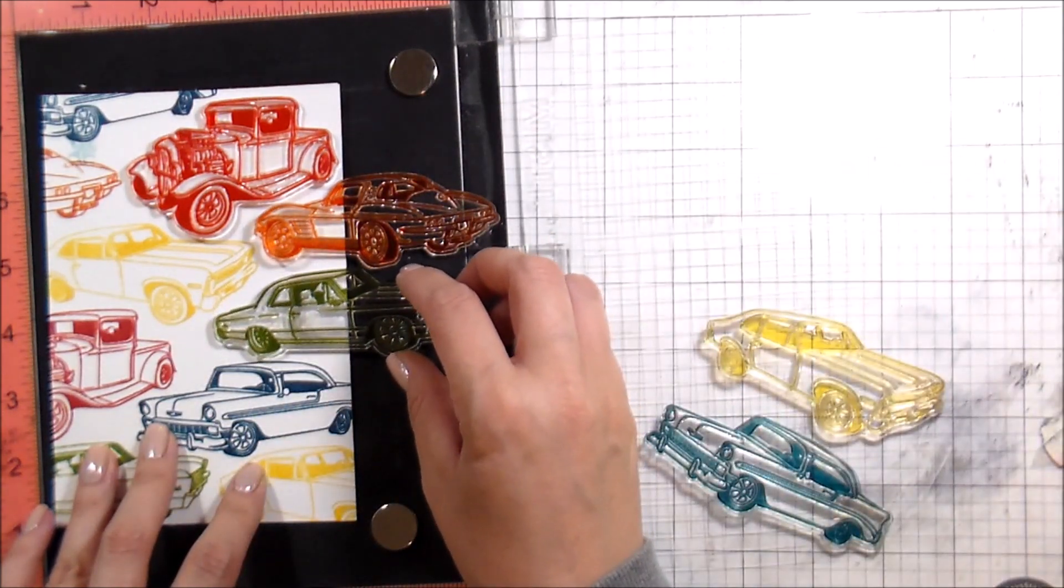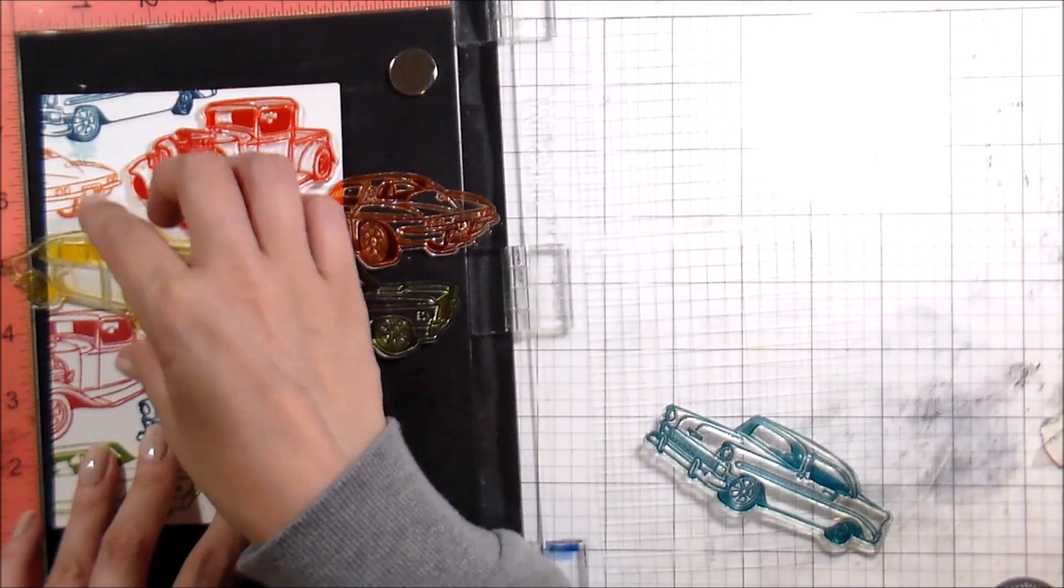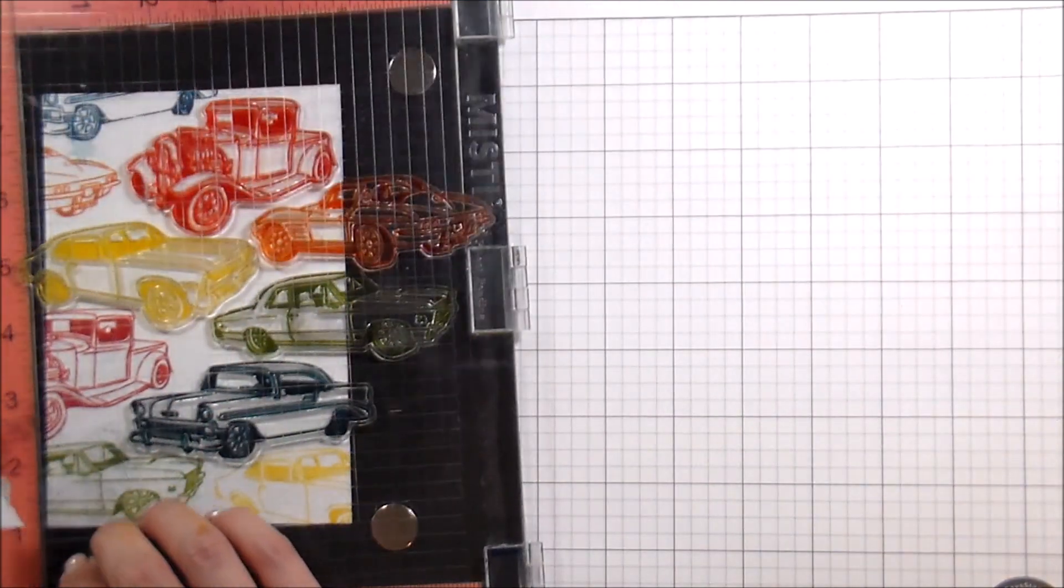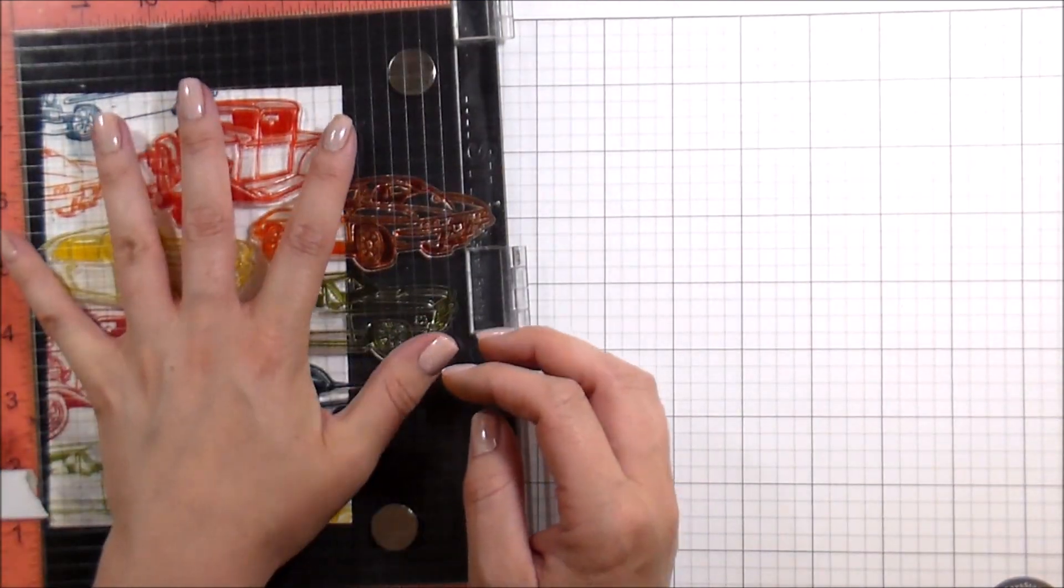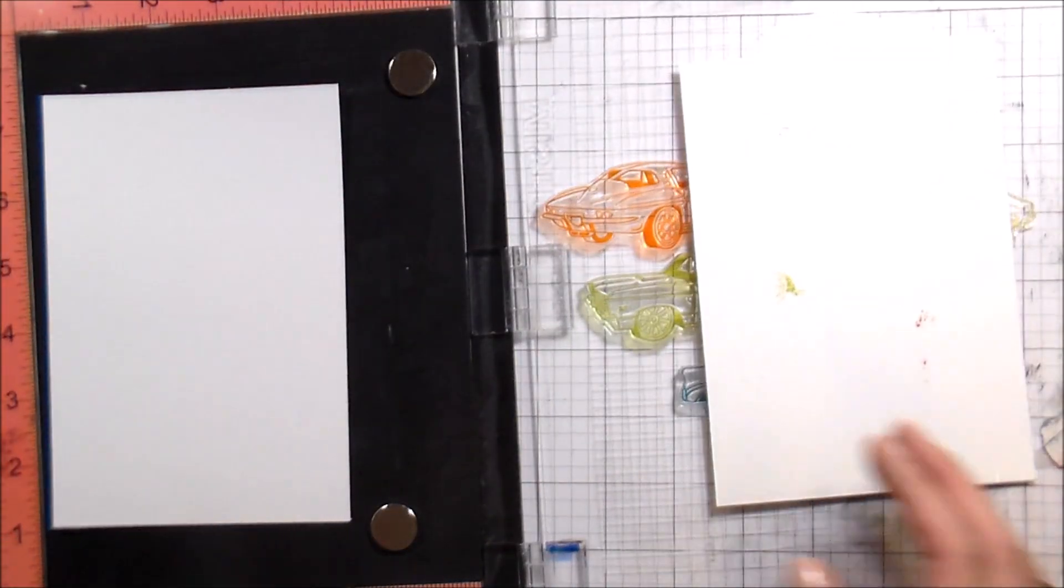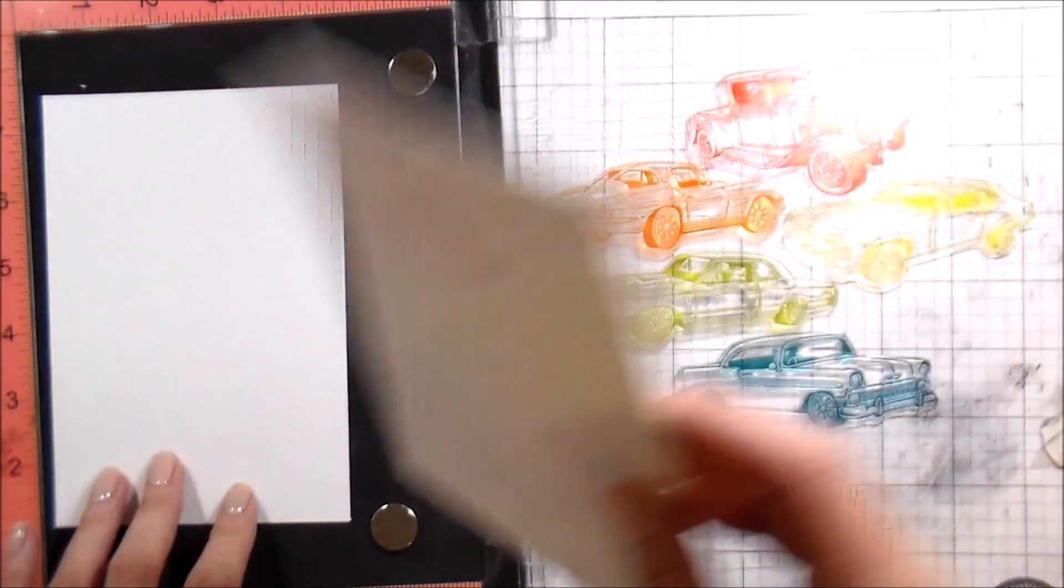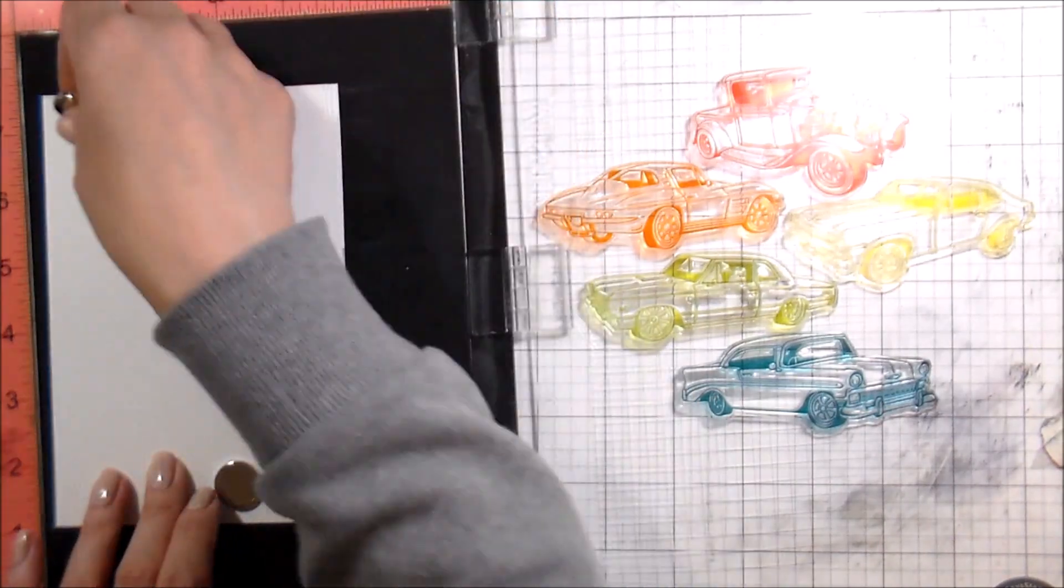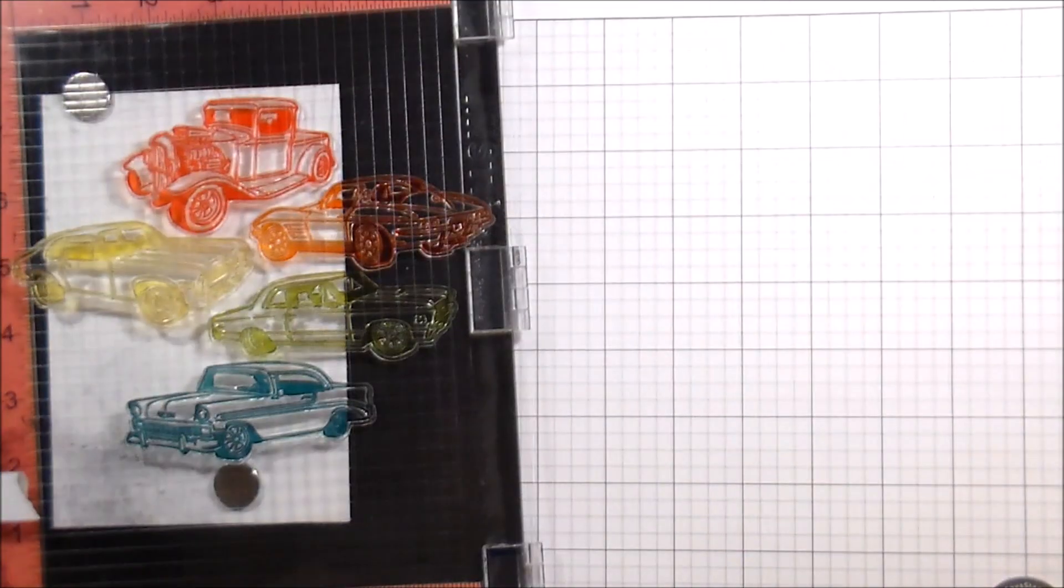And the second one, I am going to just do completely black stamping because I am going to do the watercoloring over it. This just makes it super easy because then I already know where to line up the cars. Because I'm stamping all in one ink color, I don't have to keep moving it around.